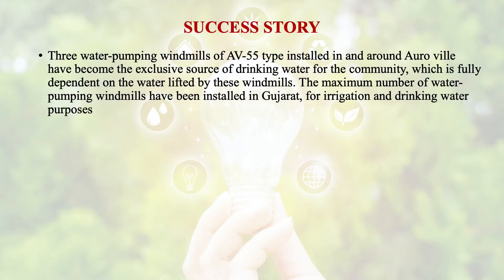Regarding the success story of water pumping windmills in India: AV-55 type windmills installed in and around Auroville have become the exclusive source of drinking water for the community, which is fully dependent on the water lifted by these windmills. The maximum number of water pumping windmills have been installed in Gujarat for irrigation and drinking water purposes.